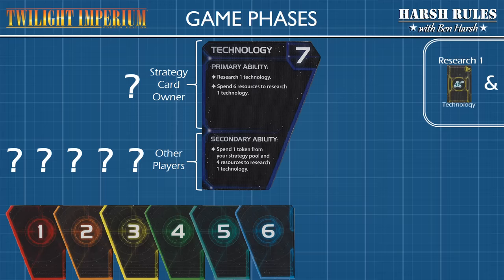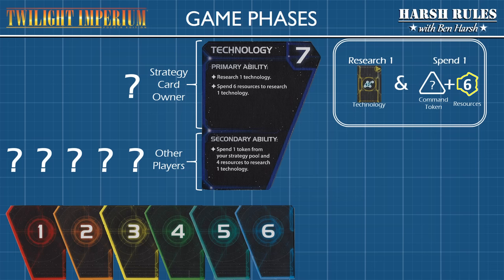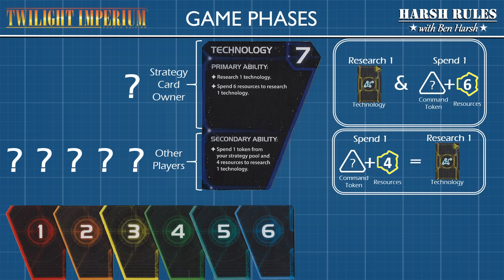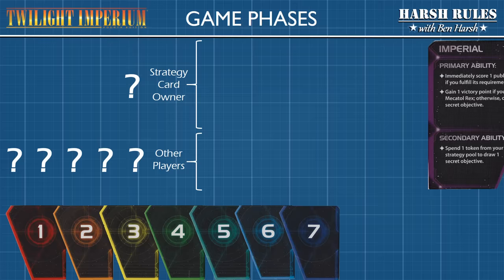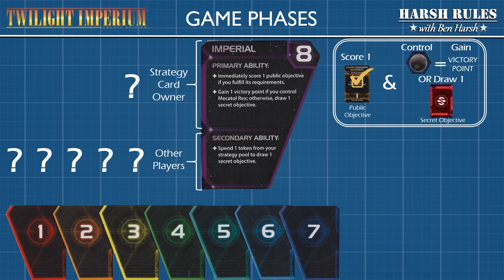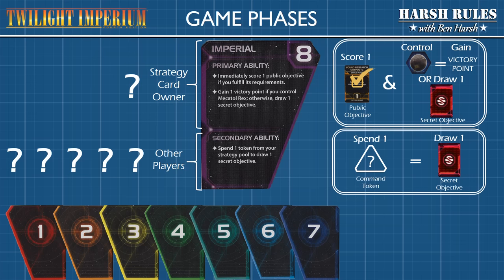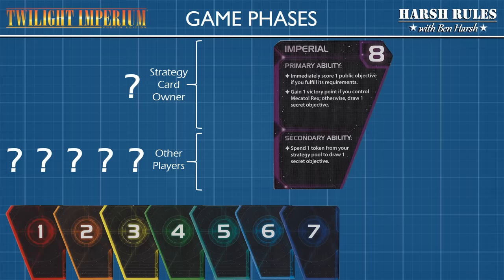Next is the Technology strategy card. With this card, the owner can research one technology and spend six additional resources to research each additional technology. For the secondary ability, a player can spend one command token and four resources to research one technology. Next is the Imperial strategy card. The owner of this card can immediately score one public objective if they fulfill the requirements, and gain one victory point if they control Mechatol Rex. Otherwise, they draw one secret objective. For the secondary ability, a player can spend one command token to draw one secret objective.